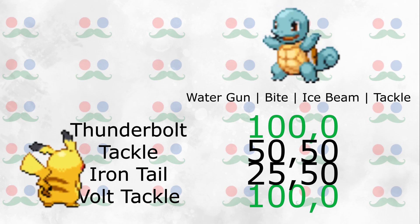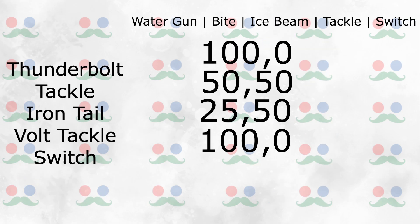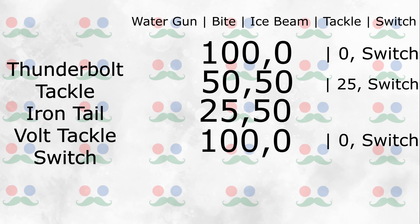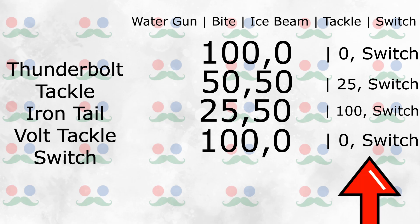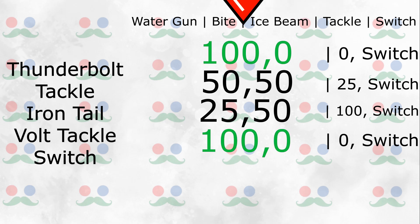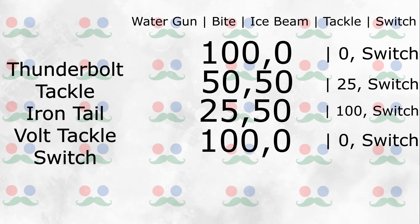However, we're missing one key option both trainers have instead of attacking: switching. Switching completely changes our payoff matrix. The trainer with Squirtle also has a Geodude, which is immune to electric type moves and only takes 25% from Pikachu's Tackle. However, Geodude takes 100% from Pikachu's Iron Tail, because Iron Tail is super effective against Geodude, who is a rock type. The trainer with Pikachu can also switch to Goldeen. Pikachu using Thunderbolt or Volt Tackle are no longer dominant strategies due to the opposing Geodude. When Squirtle switches to Geodude, Pikachu's best option is now Iron Tail, which would put Pikachu back against Squirtle with no switch option remaining.